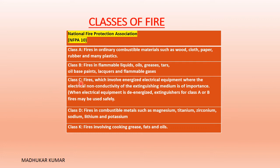Class C under NFPA 10 is the much-needed addition: it covers fires involving energized electrical equipment, which was not present in ISO standardization. Before handling such a fire, you must de-energize the equipment, and then extinguishers for Class A and B may be used. Class D covers combustible metals such as magnesium, titanium, zirconium, sodium, lithium, and potassium. Class K covers cooking grease, fat, and oil.